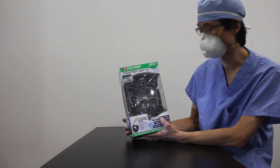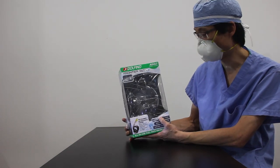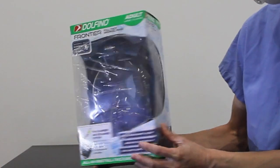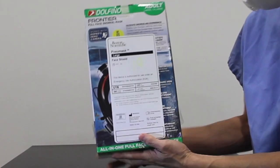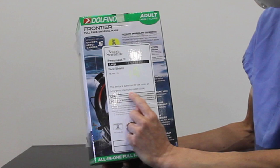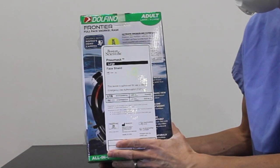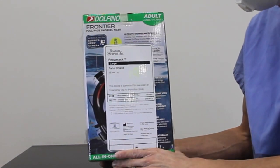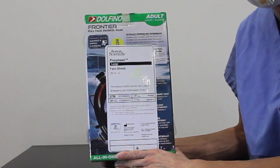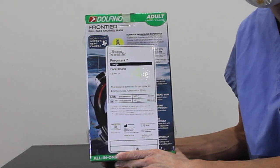As you can see, it looks like the normal Frontier Delfino mask from Walmart. It's been nicely packed but it's got this nice emergency use authorization sticker on it from Boston Scientific. This is one of the first 1500 masks ever made for this purpose.